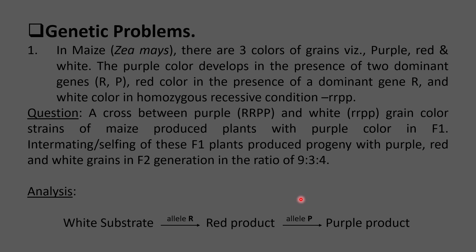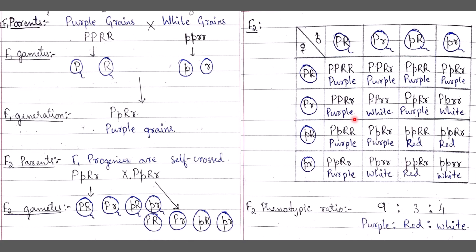We need not determine the genotypes of the F1 parents since they have been given in the question — the purple parent has a homozygous dominant genotype and the white parent has a homozygous recessive genotype. These are the F1 parents: purple grains and white grains. Gamete formation occurs, F1 generation produces purple grains, and F2 parents are selected by self-crossing the F1 progenies. The F2 gametes are placed in a Punnett square, producing purple, white, and red colored progenies.